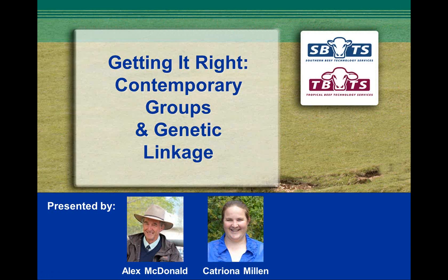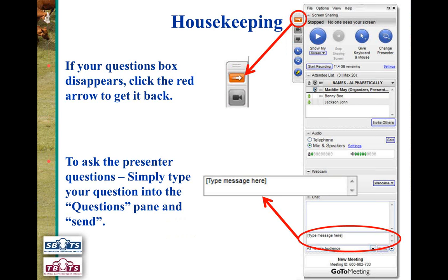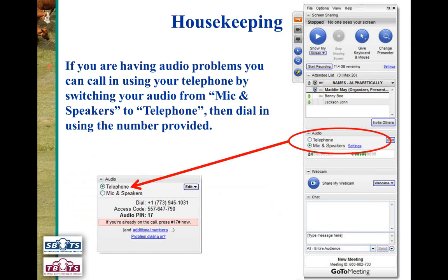A few housekeeping items before we get started. If your questions box disappears, you can click on the red arrow at the top to get it back. To ask a question, type it into the questions pane and press send. Alex will be stopping a couple of times for questions. If you're having audio problems, you can call in using your telephone by switching audio from mic and speakers to telephone and dialing the number provided.